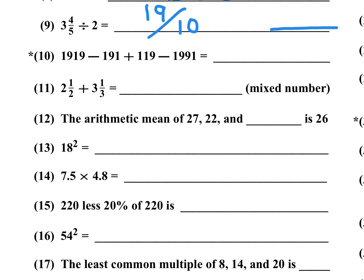Number 10 is a star problem, which is an approximation. Be careful because these are small numbers. 1919 minus 1991 — that's roughly 20 minus 90, which is negative 70. So 120 minus 70 is 50, and negative 190 plus 50 is negative 140. That should be within the plus or minus 5% range allowed.